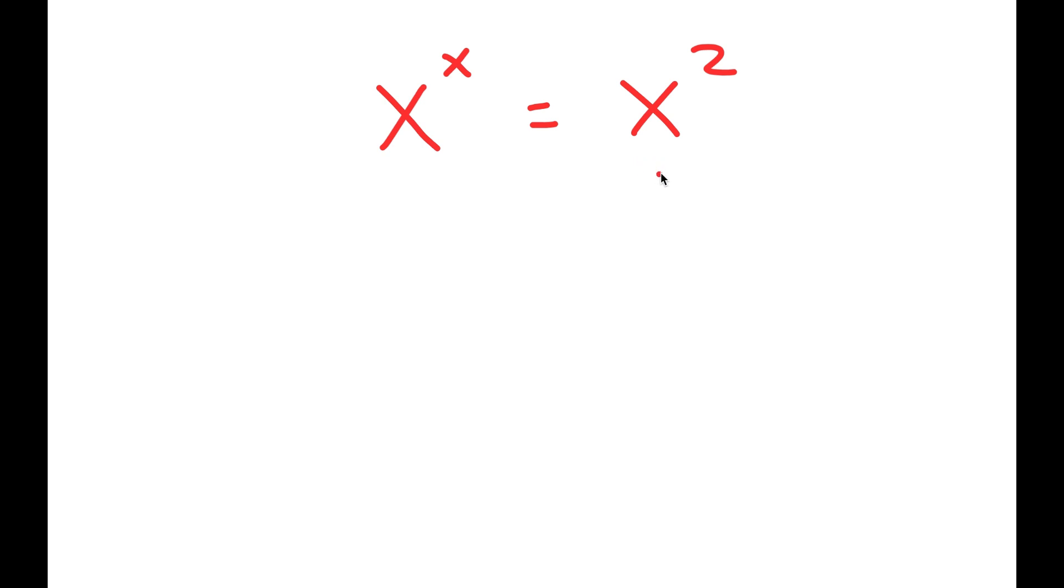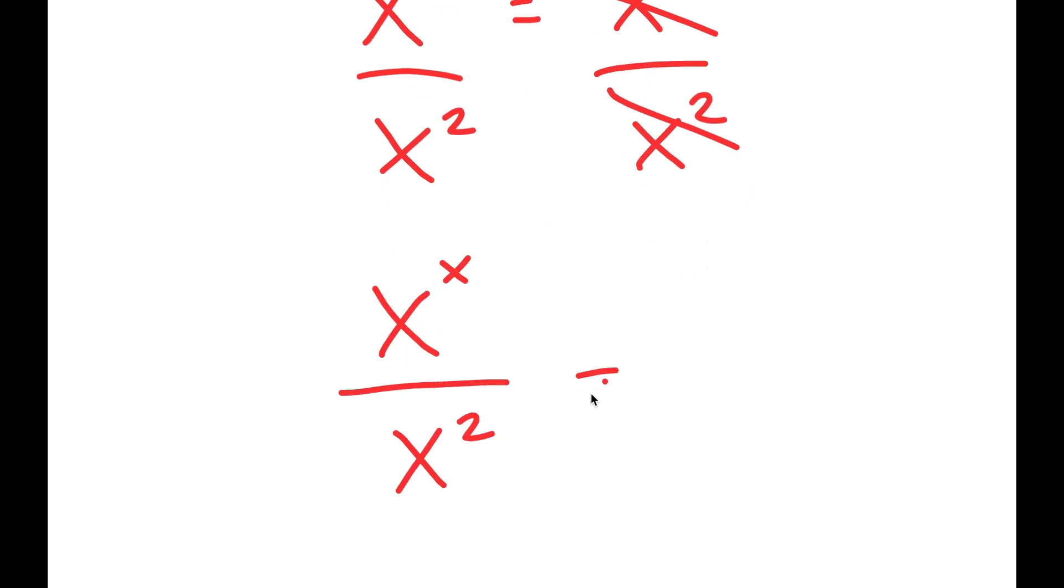So to solve this, I'm going to start by dividing both sides by x to the power of 2. So these two cancel out, and I get x to the power of x over x to the power of 2 is equal to 1.